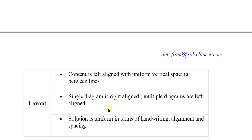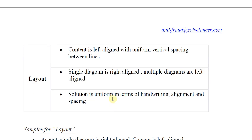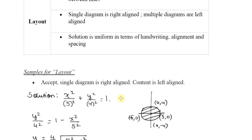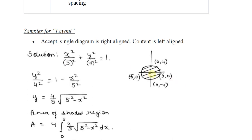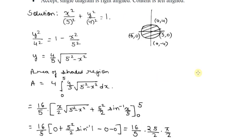In the layout samples: content is left aligned with uniform vertical spacing between lines; a single diagram is right aligned and multiple diagrams are left aligned; the solution is uniform in terms of handwriting, alignment, and spacing. For example, an answer with a single diagram that is right aligned and solution text that is left aligned is acceptable and can be passed.